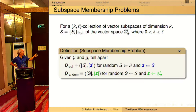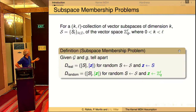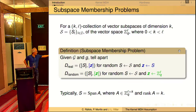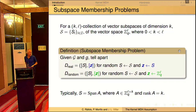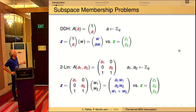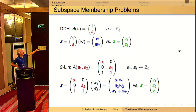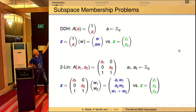The decisional problem is distinguishing a random vector in the subspace from a random vector in the whole space. So it's a subspace membership problem, and typically this is implemented taking a matrix. Each subspace in this family is defined as the column span of a full rank matrix, and then you can consider the DDH problem or the linear problem specified in that way.